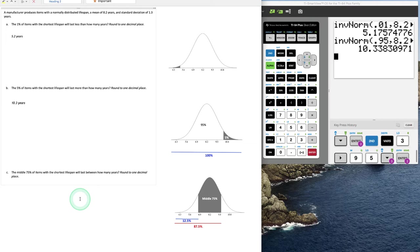The next example demonstrates the middle. The middle 75% of items with the shortest lifespan will last between how many years? So here's the middle 75%. I do see that the x values on the x-axis will be a little less than 6.9 and a little more than 9.5.